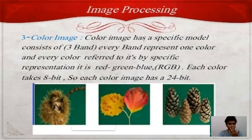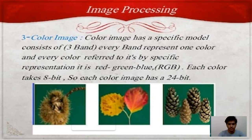The third one is color image. A color image as a specific model consists of three bands. Every band represents one color, referred to by its specific representation: red, green, and blue. Each color takes 8 bits, so each color image has 24 bits.